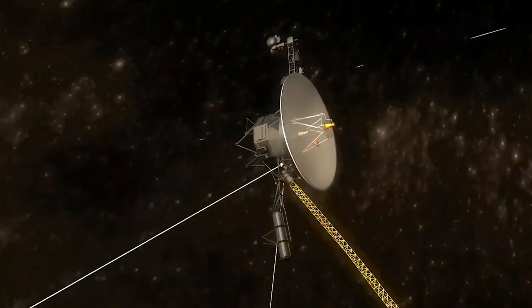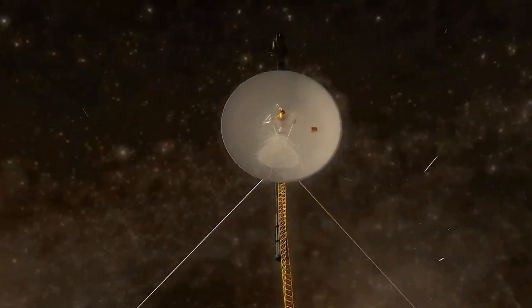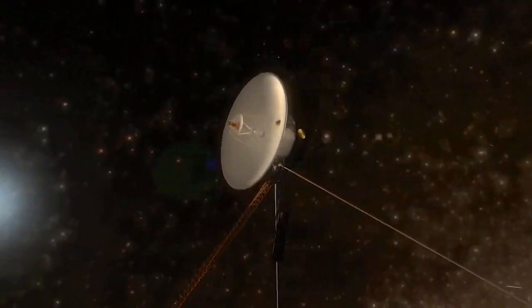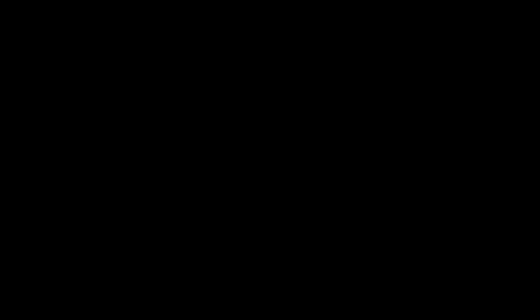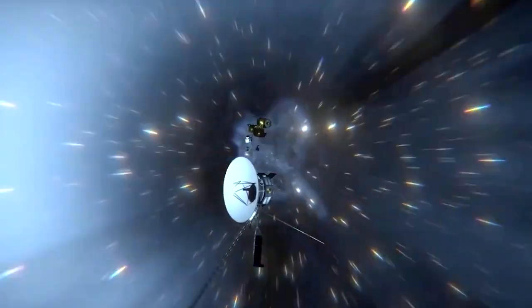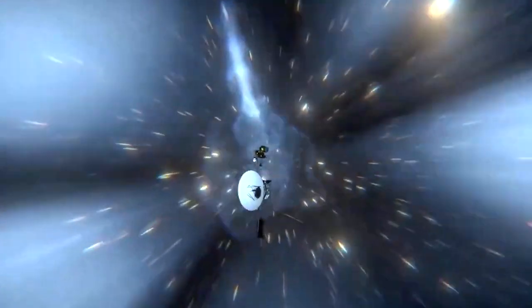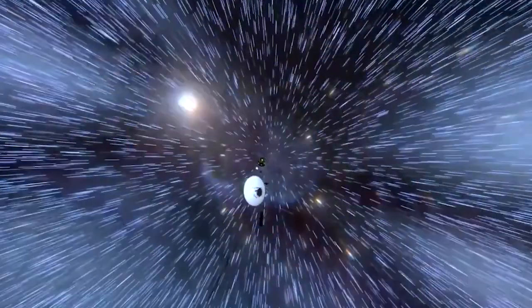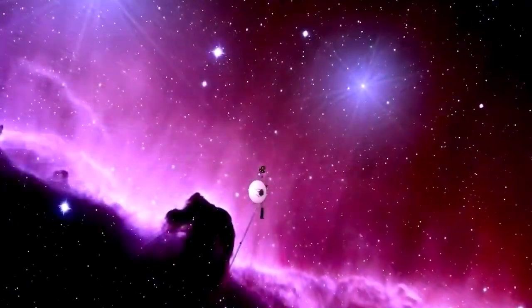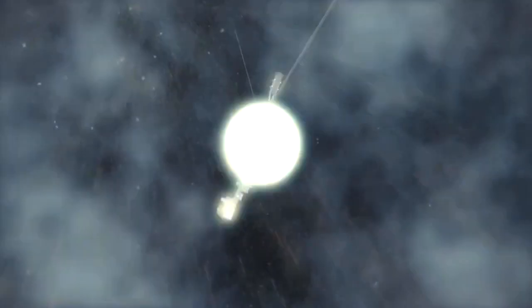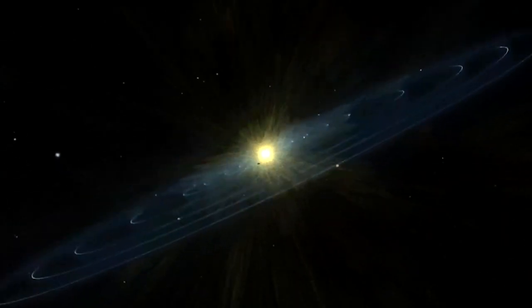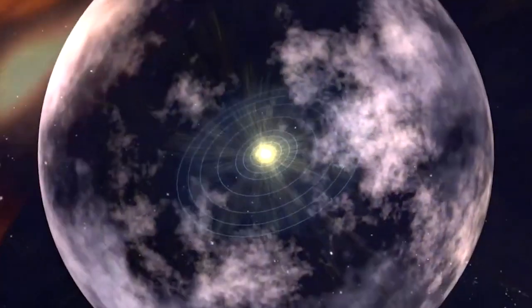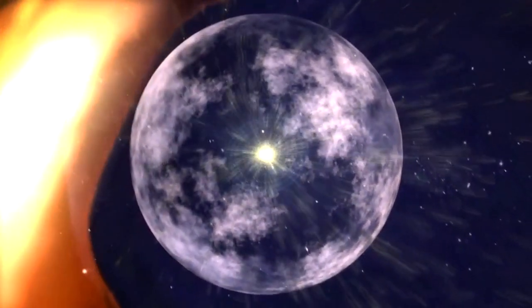Four years ago, the Voyager 2 probe became just the second human-made object in history to exit the solar system and officially enter interstellar space. On November 5, 2018, the craft officially left the solar system as it crossed the heliopause, the boundary that marks the end of the heliosphere and the beginning of interstellar space. This area is the outermost region of the solar system, sometimes referred to as the bubble, and is located around 119 astronomical units from the sun.